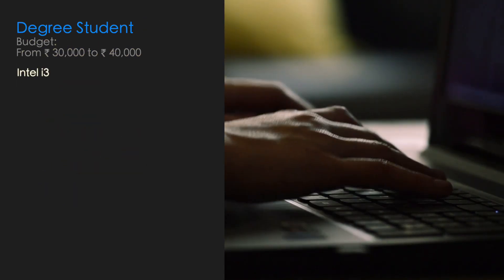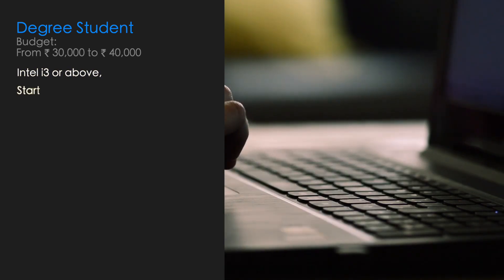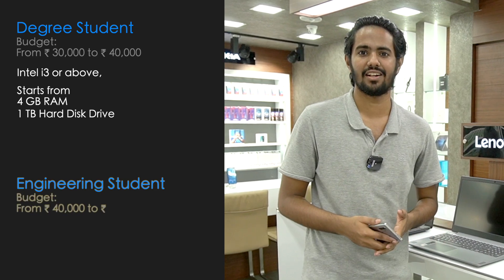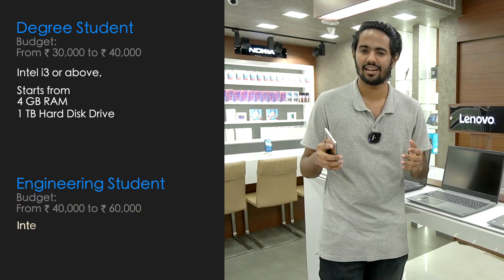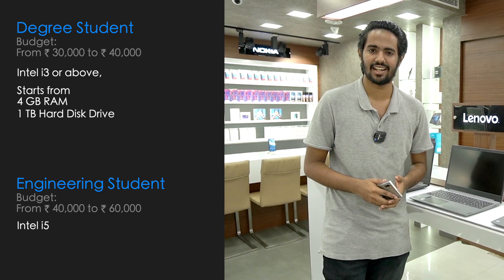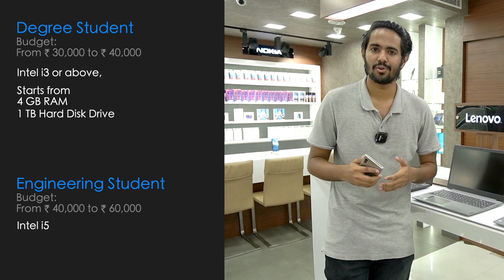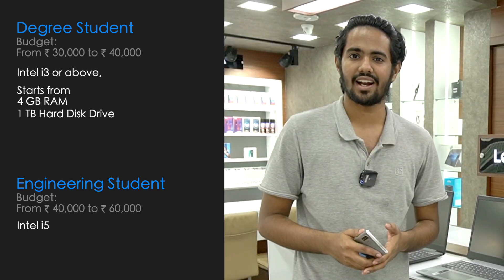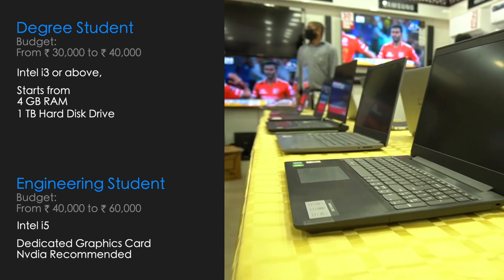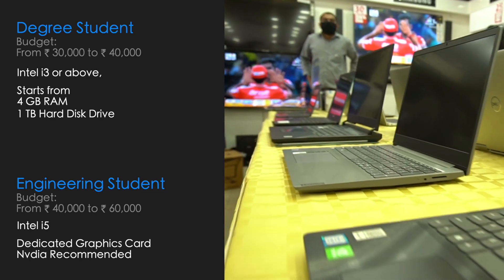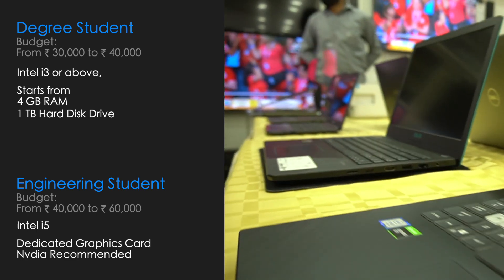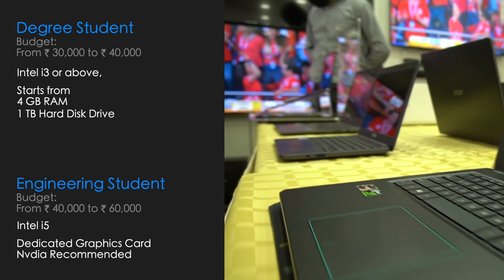If you are a degree student, you can use Intel i3 processors with 4GB RAM and 1TB hard disk. In the engineering field, an Intel i5 processor is better for handling heavy tasks. You can also use AutoCAD for graphic-related software with a dedicated graphic card. If you choose the i3 processor range, the price is around 30,000 to 40,000 rupees. If you use i5, the price range is 40,000 to 60,000 rupees.